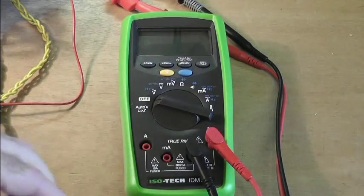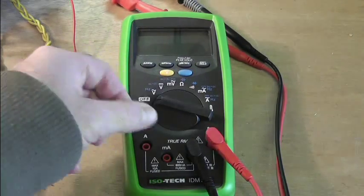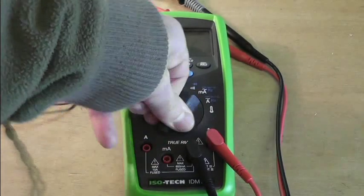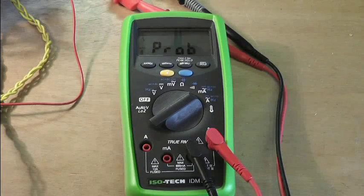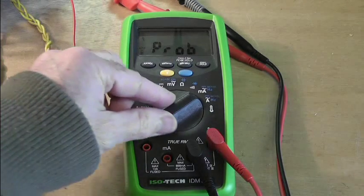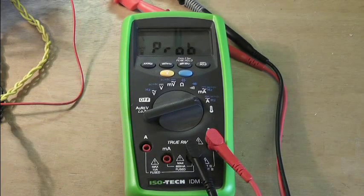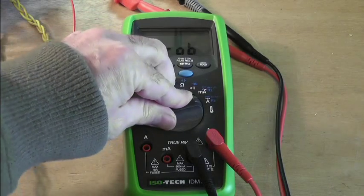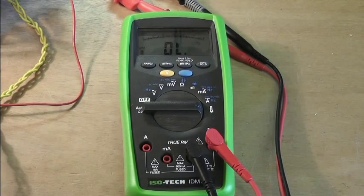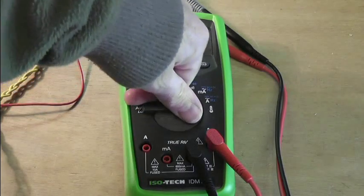For example if I wanted to measure current and I had the red probe in that hole, it's going to beep at me. You can't do that and it says probe on the warning screen, same for amps. But for the others where it doesn't matter, it doesn't beep. It's kind of handy that.